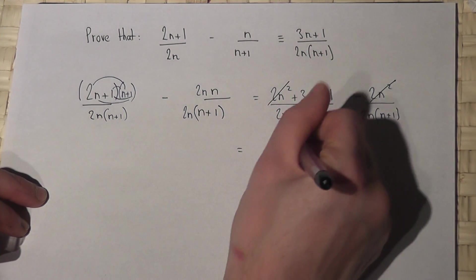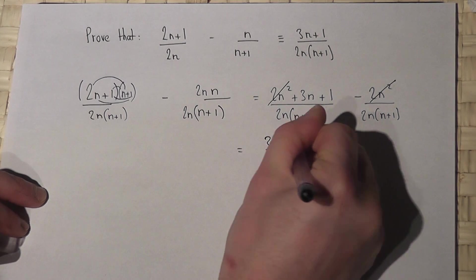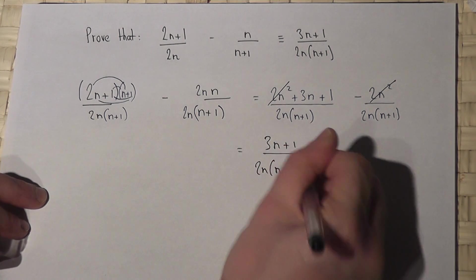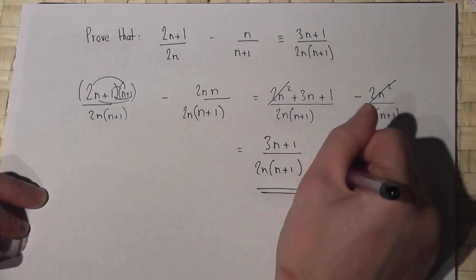I'm left with (3n + 1) on the top, all over 2n(n+1), as required.